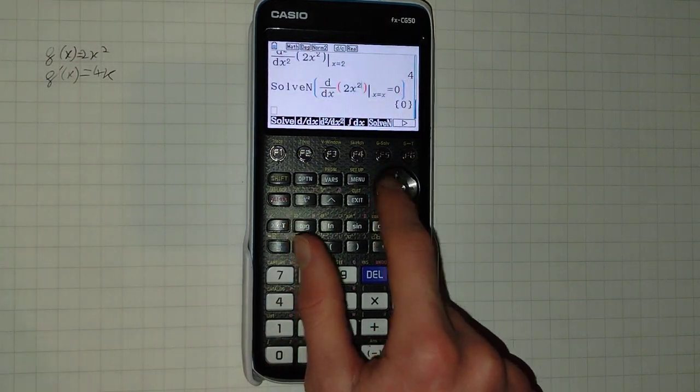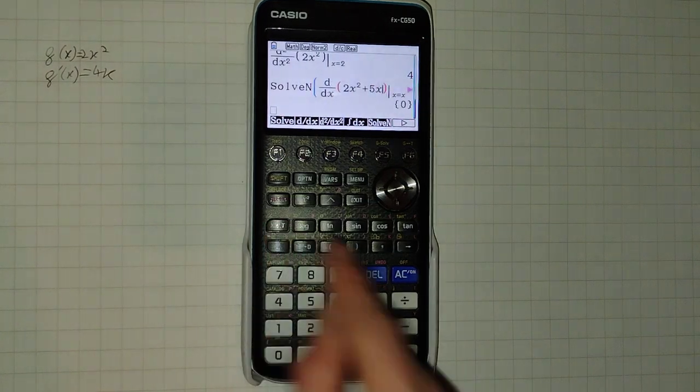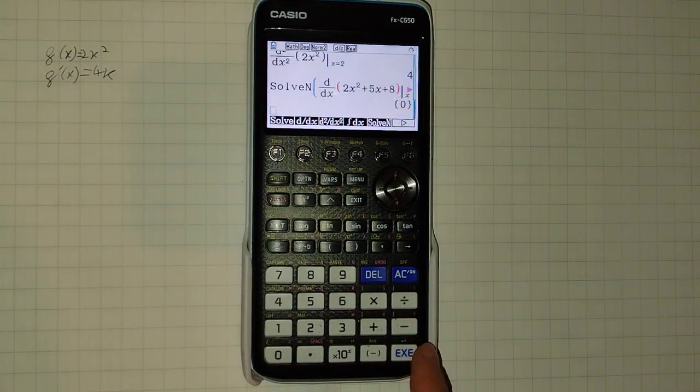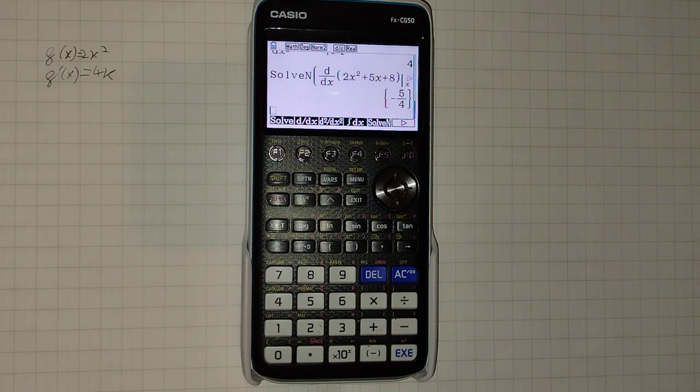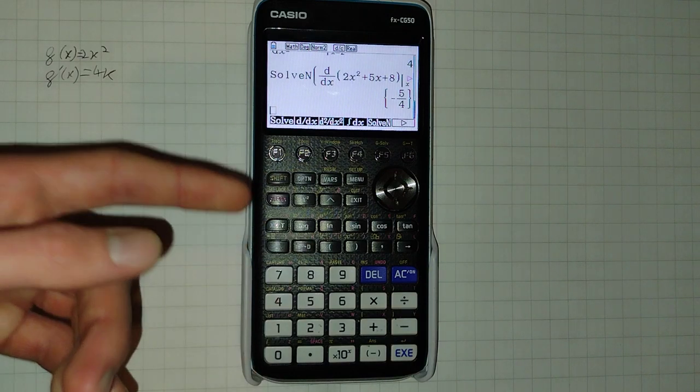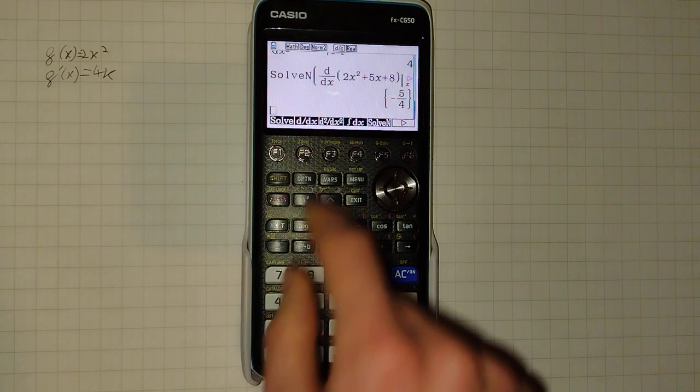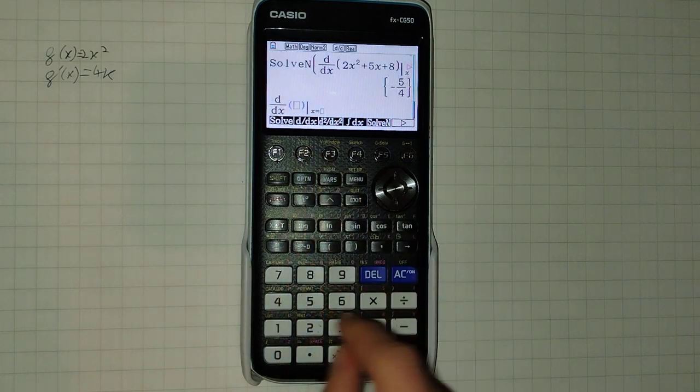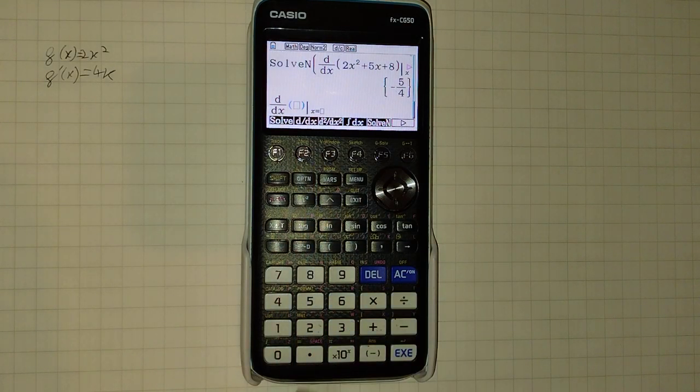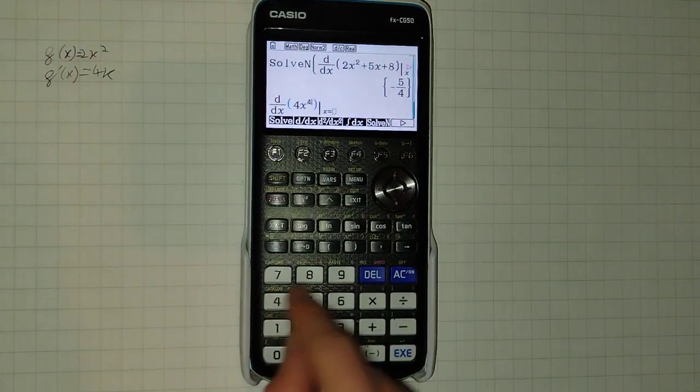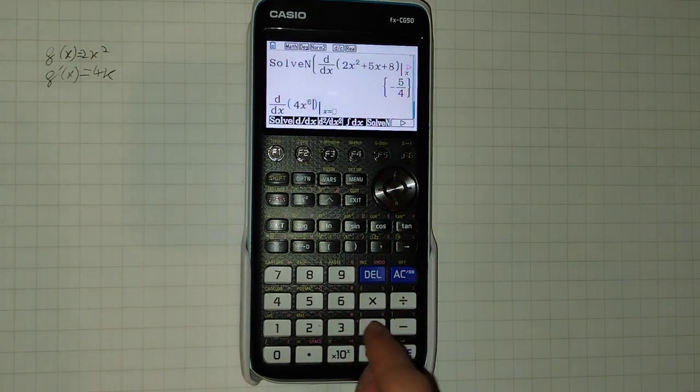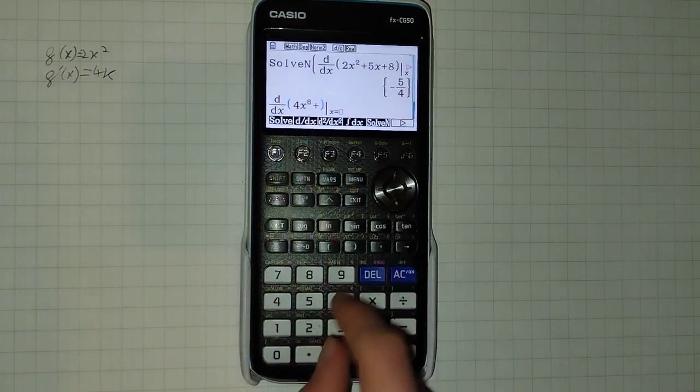If we do a more complex one, one that wouldn't be zero, you see, it will tell us where the function, where its gradient will be zero. And of course, if there are multiple places where it will be zero, let's put in like a higher one, a sixth degree polynomial.